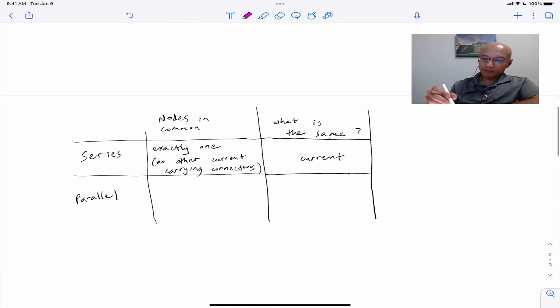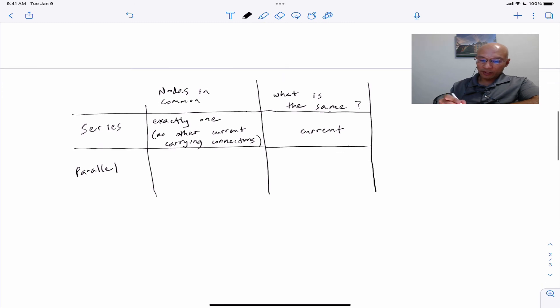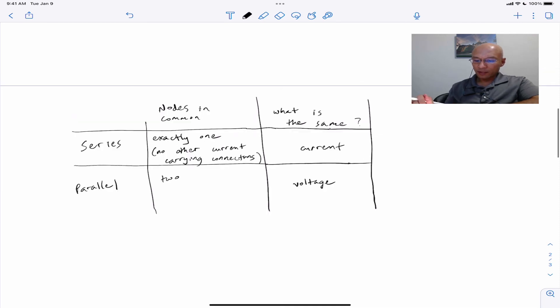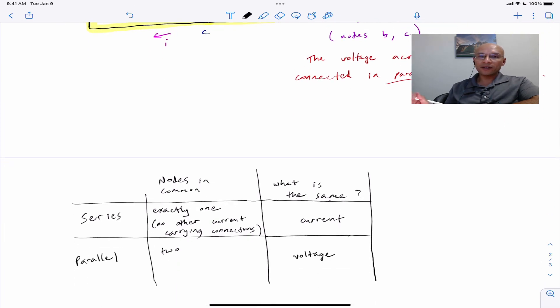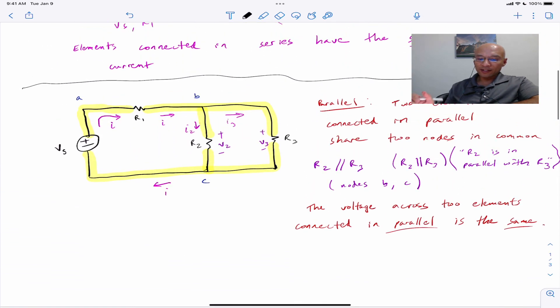So back to the summary table, we'll write here that for the parallel circuit, we have exactly two nodes in common, and the same, and what's the same? Well, it's the voltage. So I hope that helps you recognize elements that are connected in series or parallel. An important key to this is to identify the nodes, and then you just ask yourself, well, what's in common? Is it one node? Is it two? If it's one, are there other current-carrying connections?